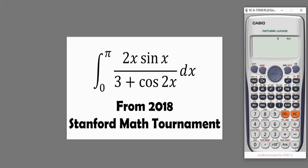Now the next thing you have to do is to put it in radian mode. When solving calculus problems with the Casio calculator, I highly recommend that you should be working with radian mode, not degree. Because when you use degree, in some cases you will not get the correct answer. So to put it in radian, press shift then mode. Option 4 is radian.